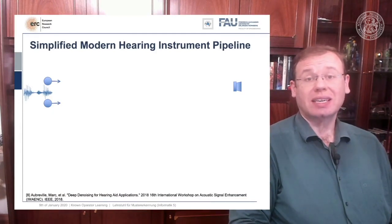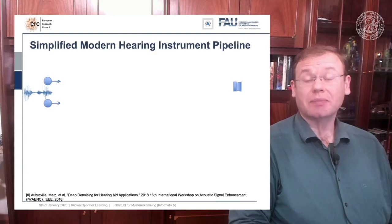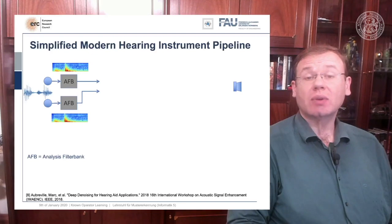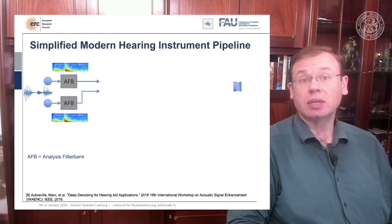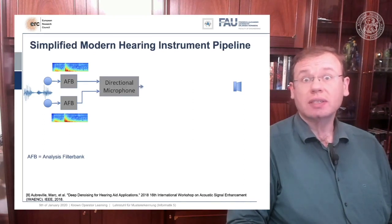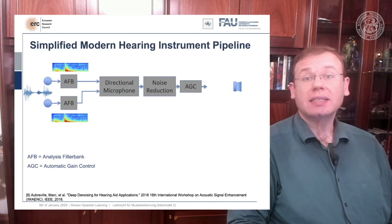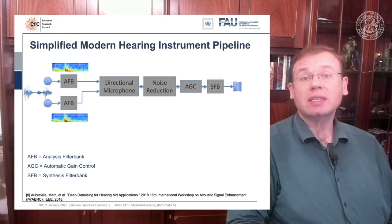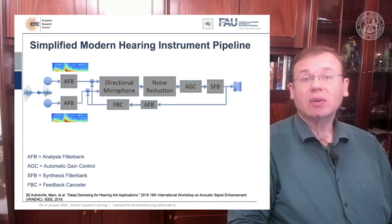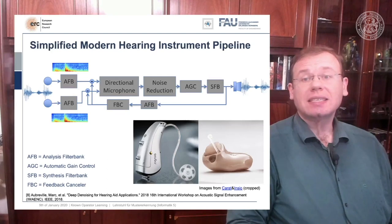One thing that I would like to demonstrate is the simplified modern hearing aid pipeline. This is a collaboration with a company that is producing hearing aids, and they typically have a signal processing pipeline where you have two microphones. They collect some speech signal. Then this is run through an analysis filter bank, essentially a short-term Fourier transform. This is then run through a directional microphone in order to focus on things that are in front of you. Then you use noise reduction in order to get better intelligibility for the person who is wearing the hearing aid. Then you go to automatic gain control, and using the gain control you then do a synthesis of the frequency analysis back to a speech signal that is then played back on a loudspeaker within the hearing aid. There's also a recurrent connection because you want to suppress feedback loops.